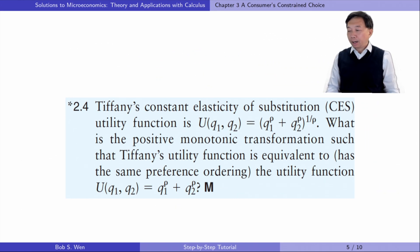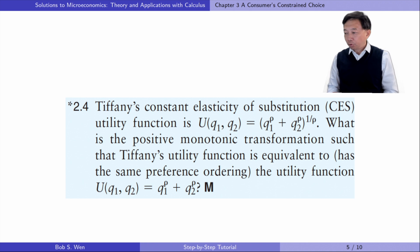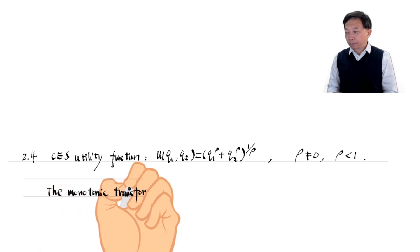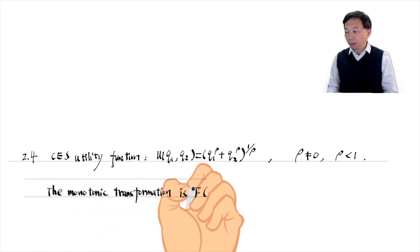Let's go to exercise 2.4. Tiffany's constant elasticity of substitution utility function is as follows. What is the monotonic transformation such that Tiffany's utility function is equivalent to the utility function as follows? The monotonic transformation is f(x) equals x to the power rho.